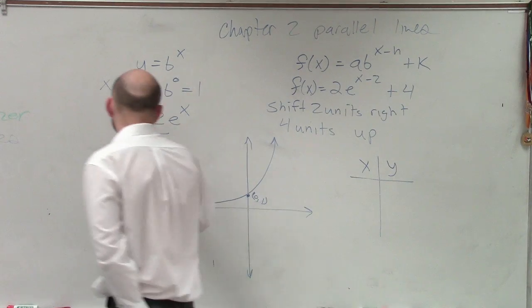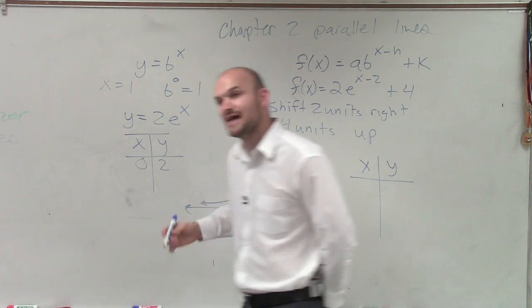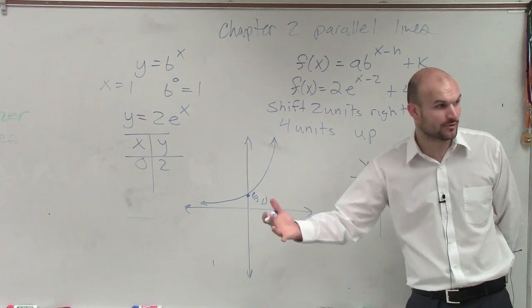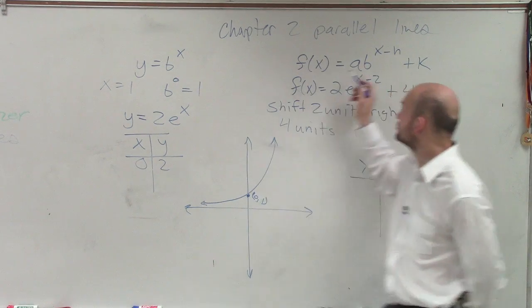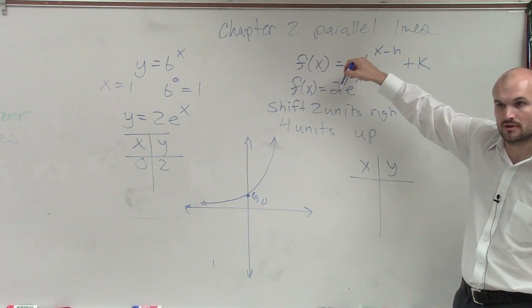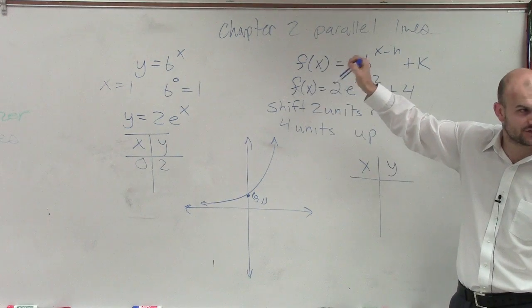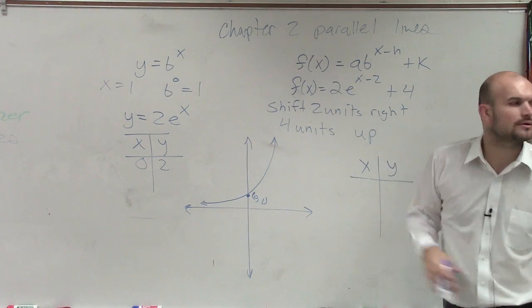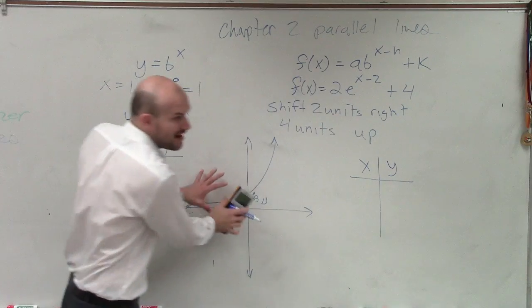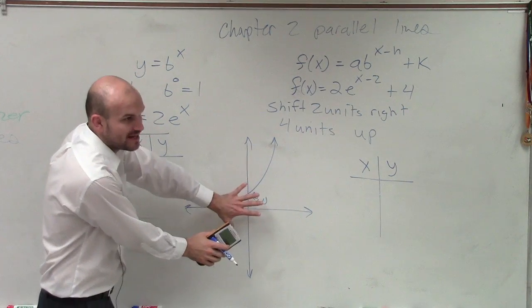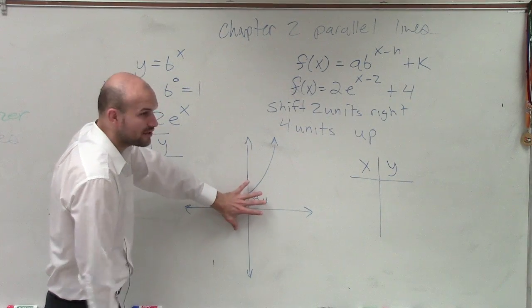So actually, this graph does not cross that 0 comma 1 like the regular parent graph, because now it's being multiplied by 2. Do you guys see how it's changing that? So is it wrong? No, this is the parent graph for all functions without any transformations. That's what the parent graph looks like.